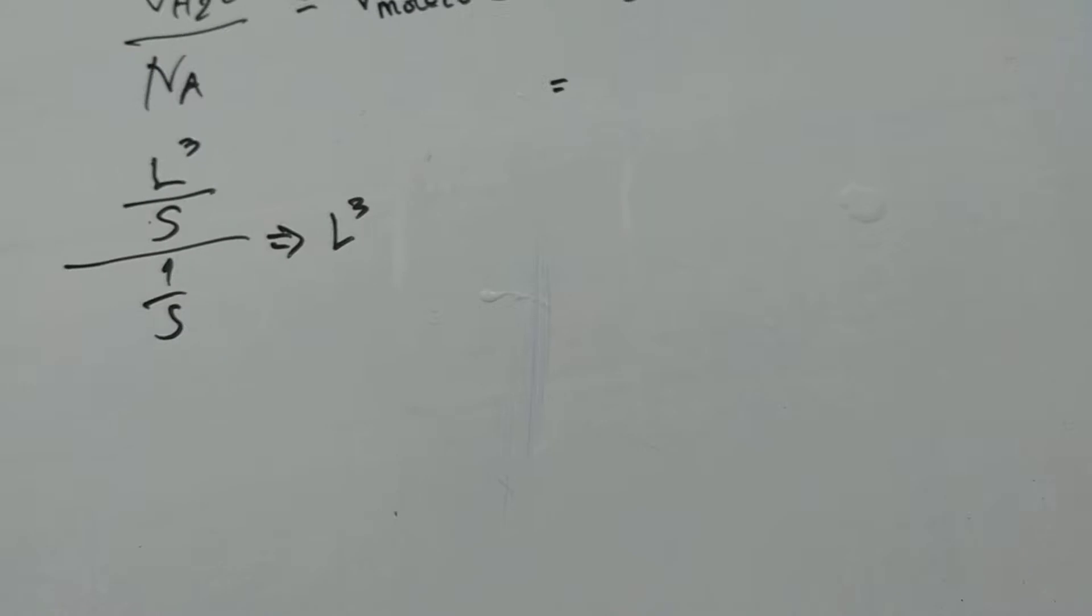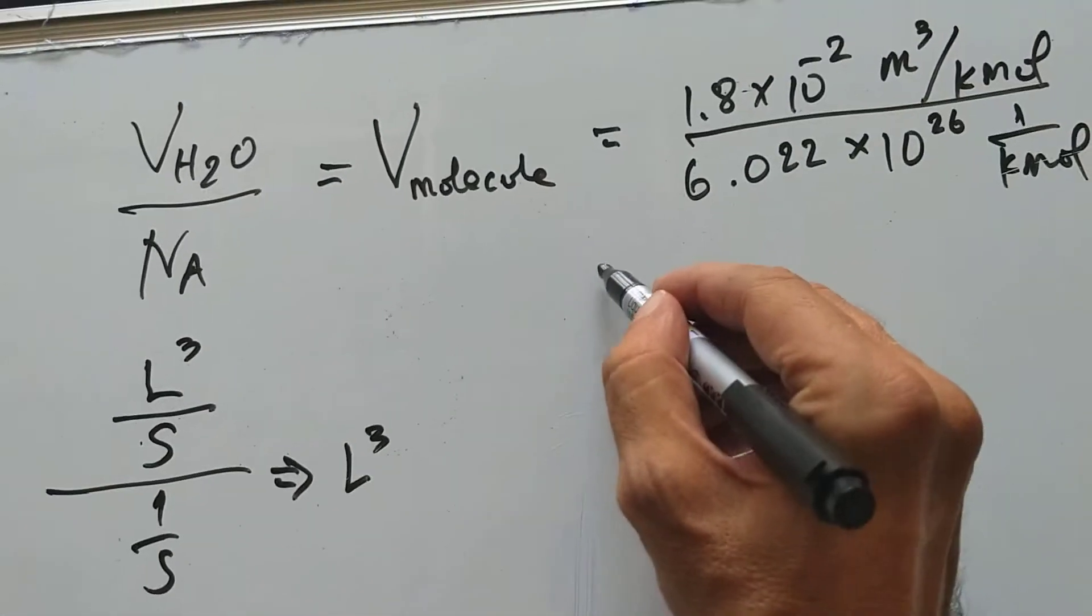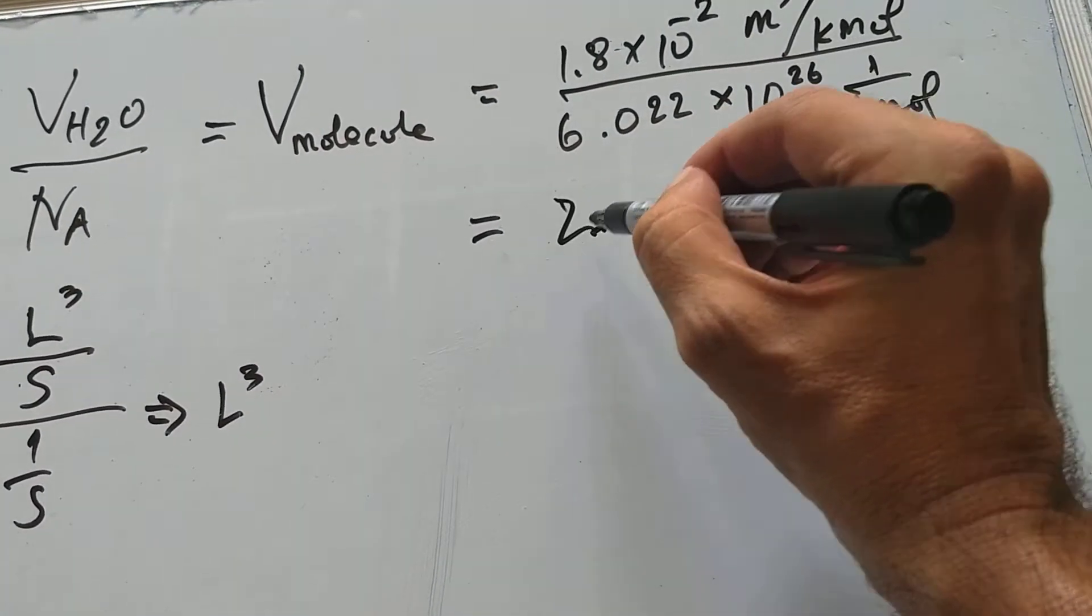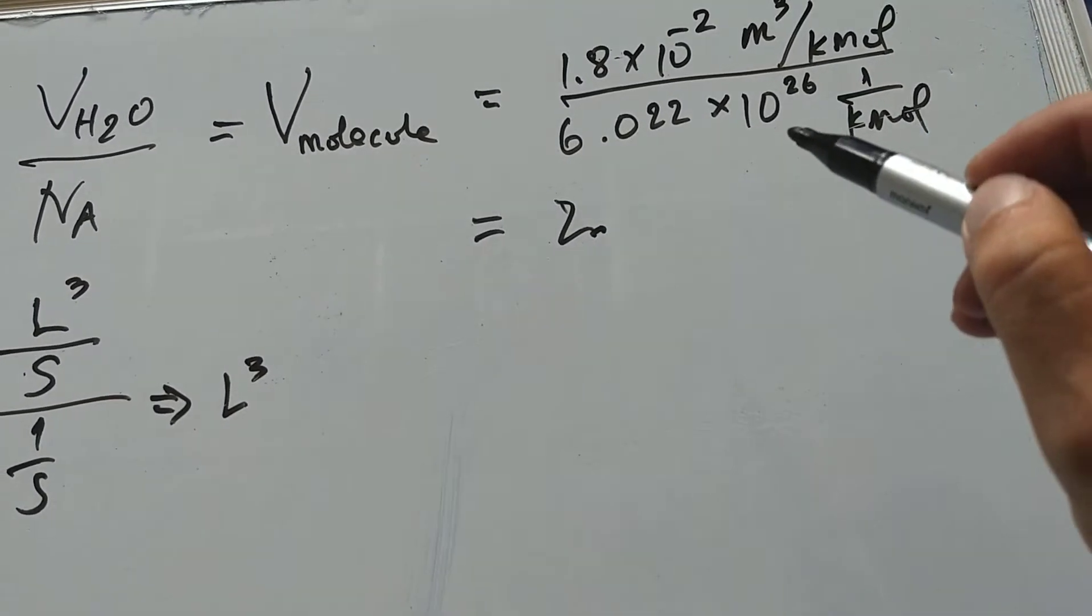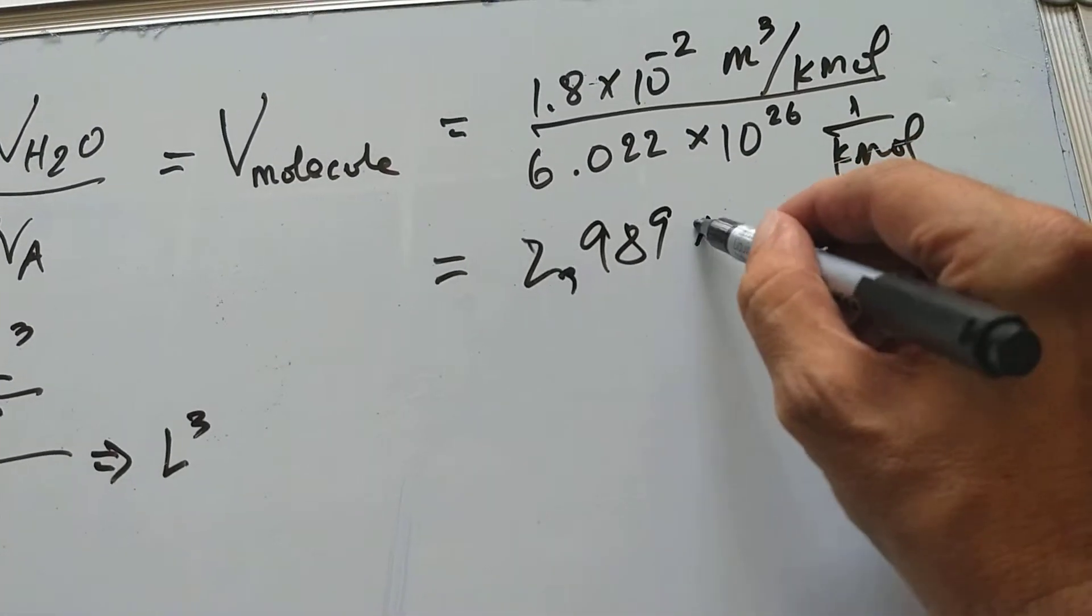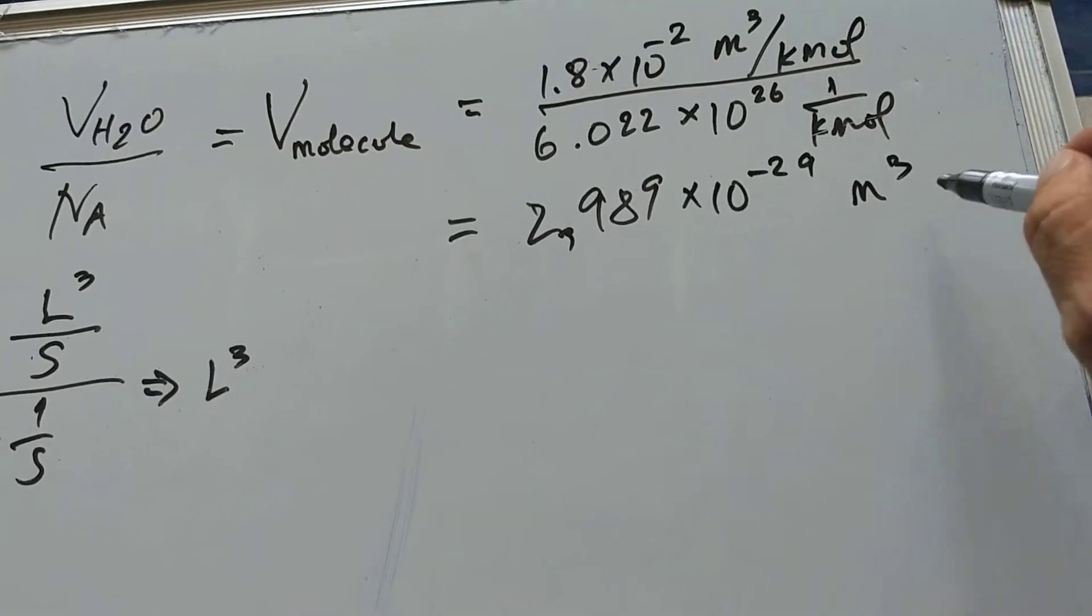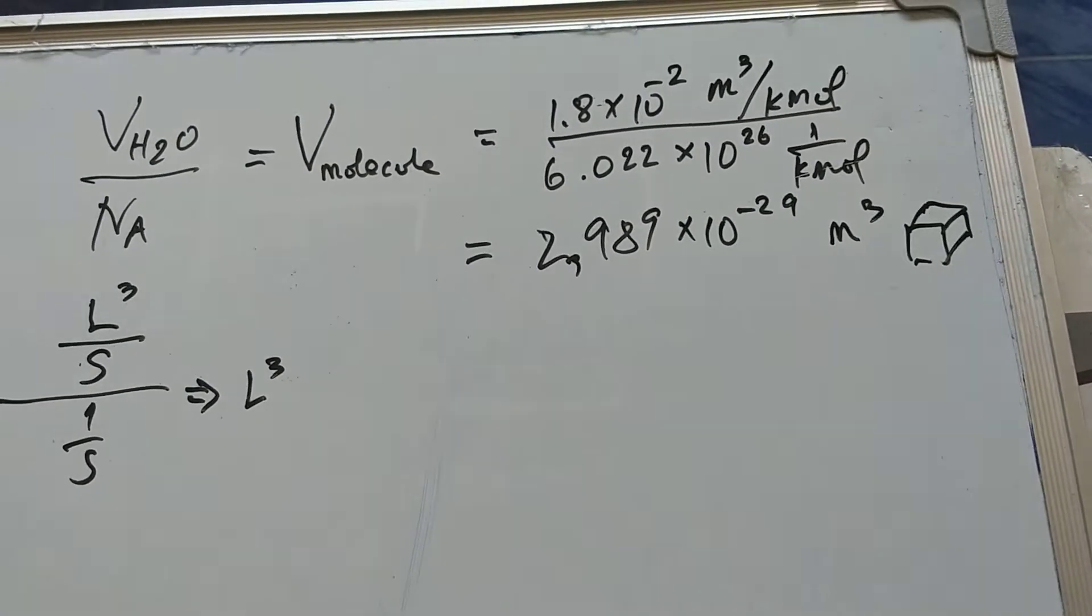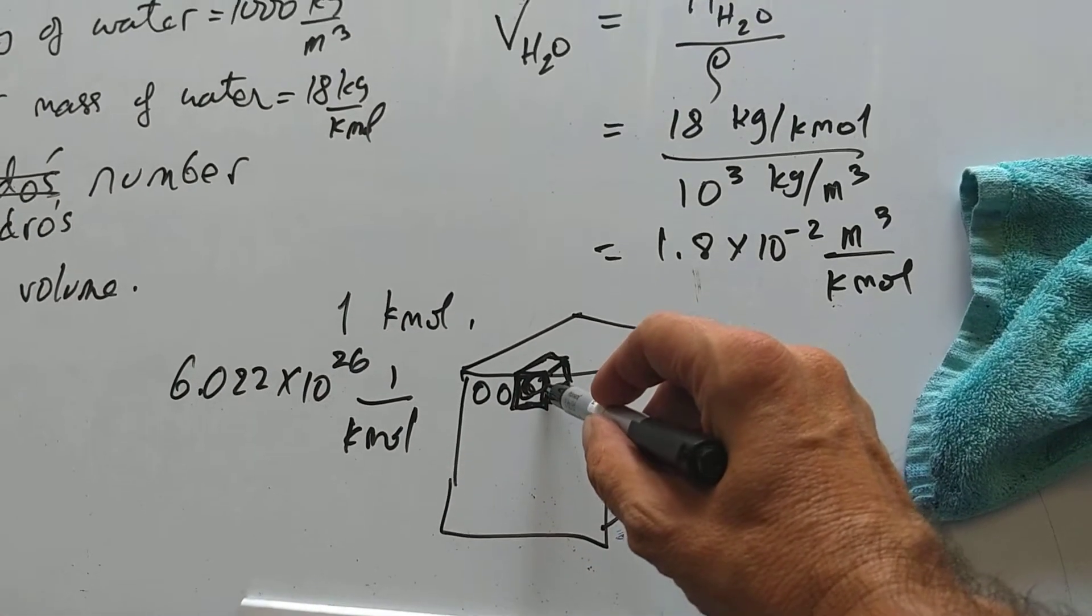When I do this division, I end up with 2.989 times 10 to the minus 29 meters cubed. Very tiny, tiny, tiny volume, and my molecule is in there. I have this volume.